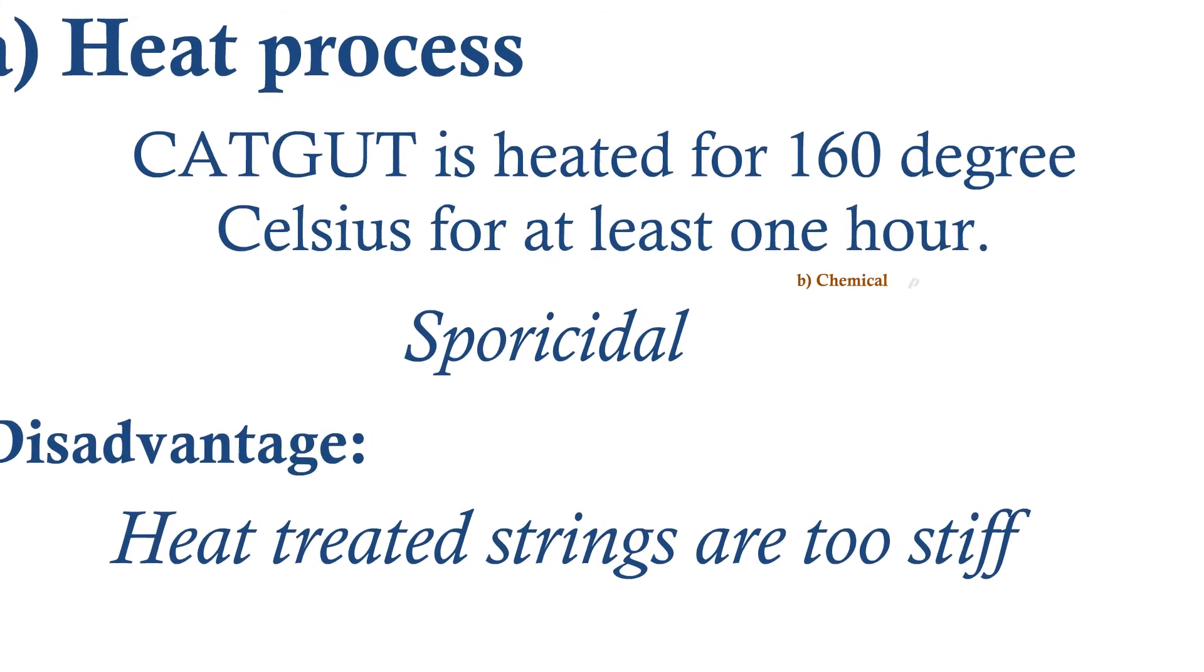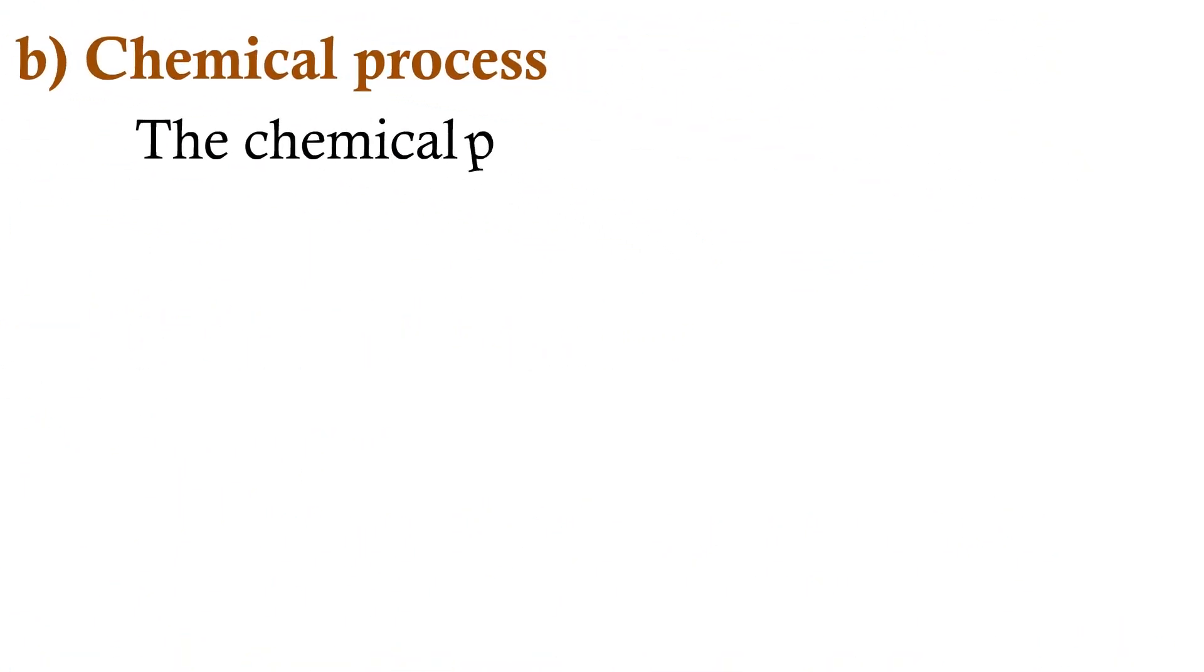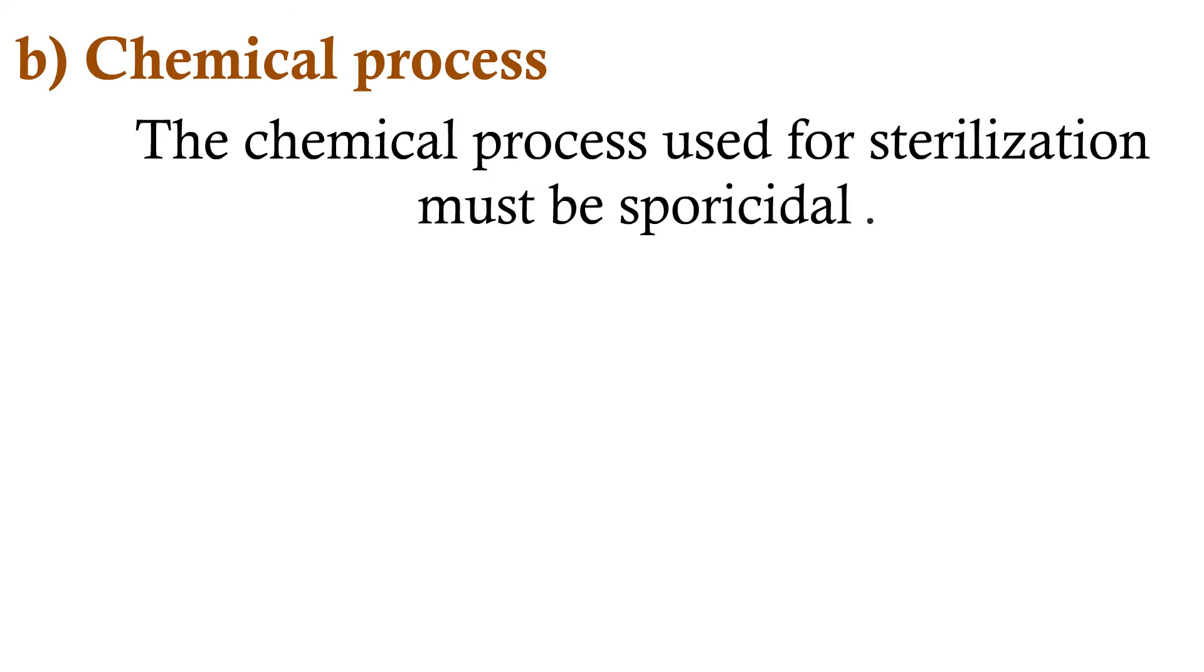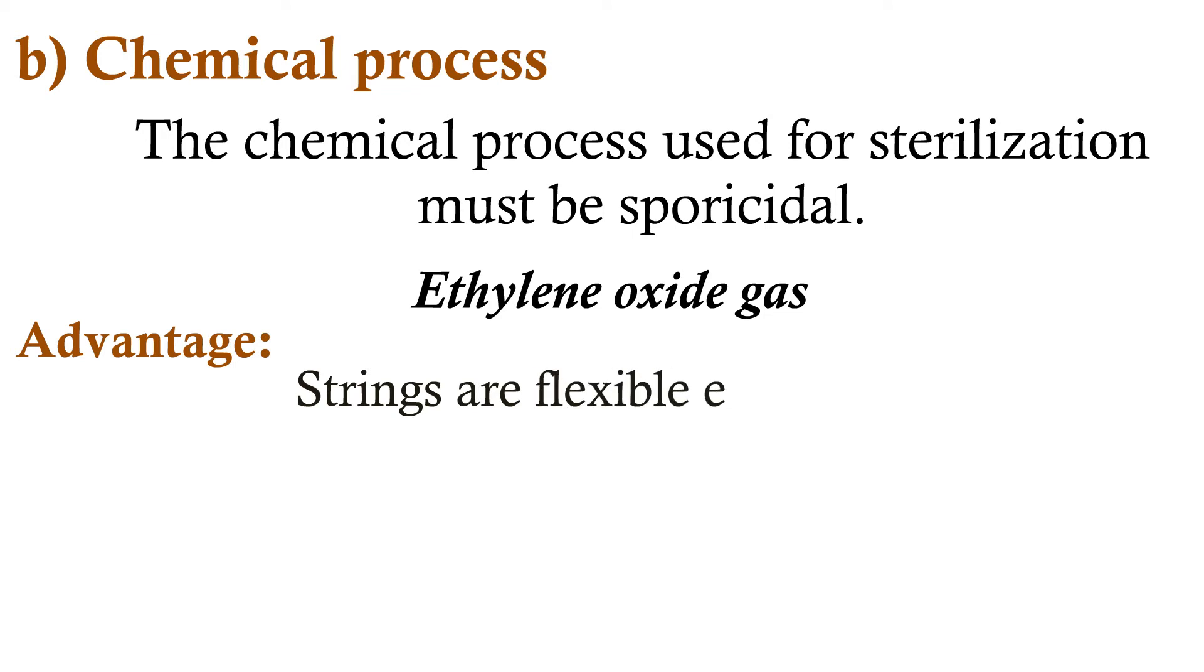Chemical process. The chemical process used for sterilization must be sporicidal. Ethylene oxide gas is used for the chemical sterilization. The advantage of this method is that strings are flexible even after treatment with the chemical.